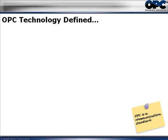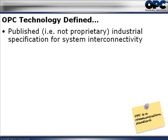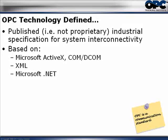So what is this OPC stuff anyway? OPC is a published industrial specification — published means that anyone can write an OPC server or an OPC client. Anybody can go to the OPC Foundation, become a member, and download the specifications and write their own applications. There's nothing that's proprietary at all. It's based on Microsoft's ActiveX, COM, and DCOM.